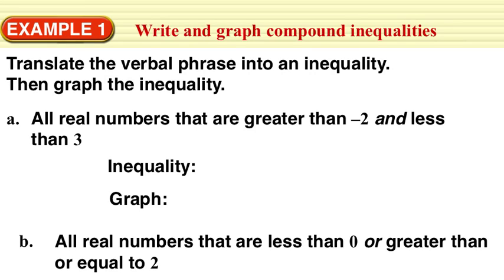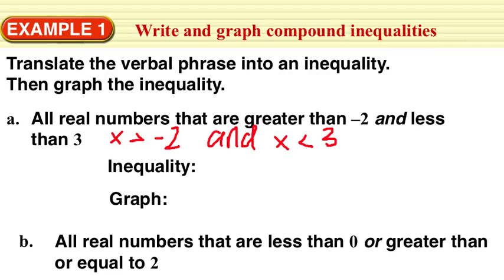Example 1: we're going to write and graph a compound inequality. First we're going to translate the verbal phrase into an inequality: all real numbers that are greater than negative 2 and less than 3. To write this as an inequality with the word 'and', that would be x is greater than negative 2 and x is less than 3, which can be written together as negative 2 is less than x, which is less than 3.